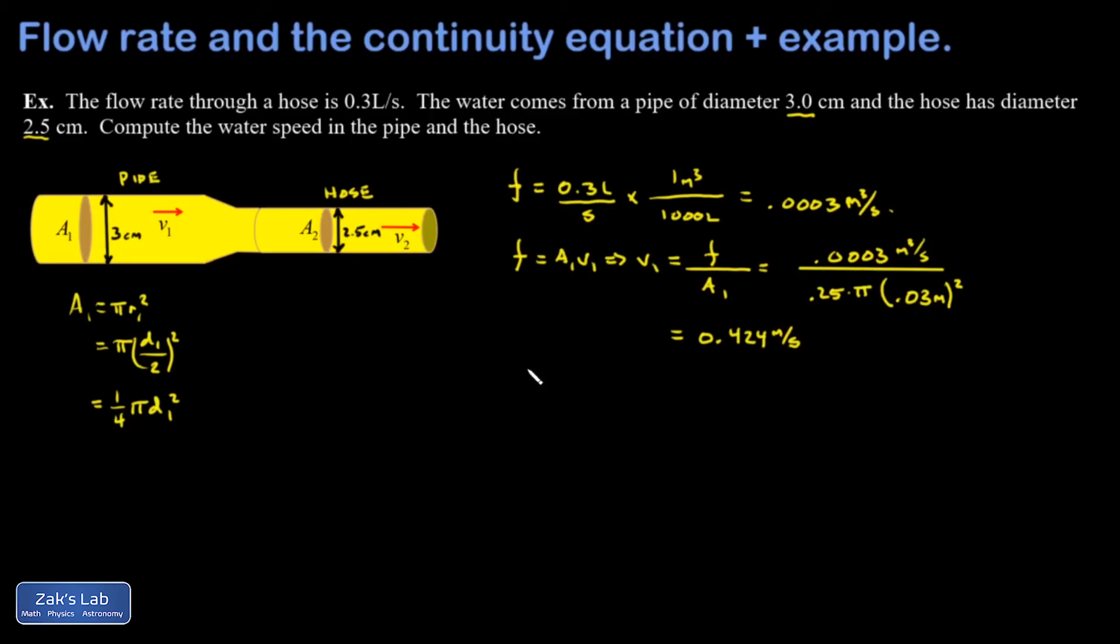Then I simply repeat the calculation for 0.2. The flow rate's the same there. So it's the same F. That's A2 V2. That means V2 is F over A2. And I do the same trick with using a diameter instead of a radius. So in the denominator, I've got 1 quarter pi times the new diameter in the proper units, 0.025 meters all squared. And I end up with a fluid speed of 0.611 meters per second.